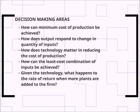The next decision-making area is: how does output respond to a change in quantity of inputs? How does technology matter in reducing the cost of production? Introducing new technologies basically leads to reducing the cost of production. Then, how can the least-cost combination of inputs be achieved? And given the technology, what happens to the rate of return when more plants are added to the firm? These are some basic decision-making areas which a business manager has to face.